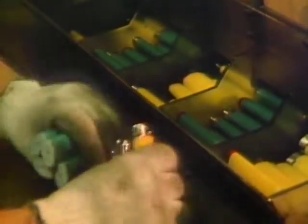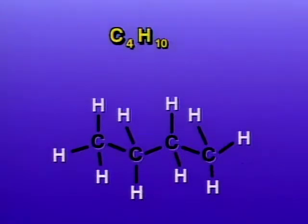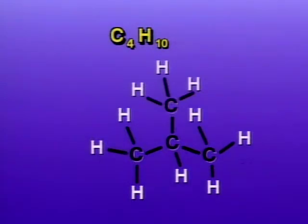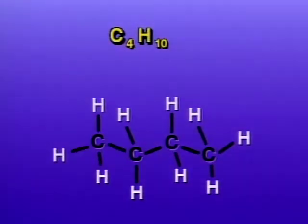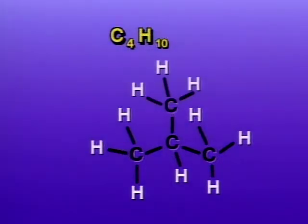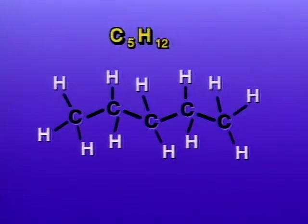The butane in these lighters is a good example. Butane is a simple hydrocarbon with four carbon atoms and ten hydrogen atoms. The carbon atoms can form a simple chain, or there can be side chains. Both of these compounds have the same molecular formula, C4H10, but they are two distinct compounds — butane and isobutane — and they have different properties. Here's another example, pentane. It has five carbon atoms, C5H12.